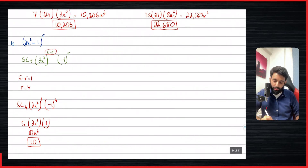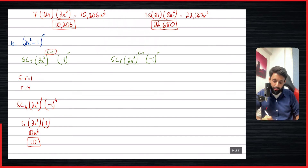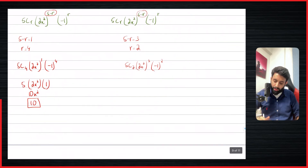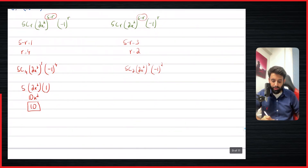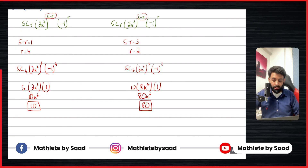Now we'll find the coefficient of x⁶. What should be the power on (2x²) so that the power on x turns out to be 6? The answer is 3, so 5 minus r should equal 3, which means r equals 2. So 5C2, (2x²) to the power of 5 minus 2 which is 3, and (−1) to the power of 2. 5C2 is 10, (2x²) cubed is 8x⁶, and (−1) squared is positive 1. So we get 80x⁶, and since we just want the coefficient of x⁶, the answer is 80.